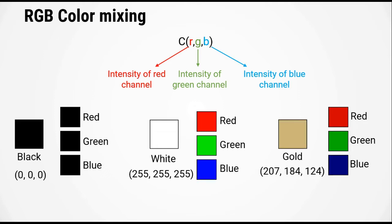We can look at a third color, which is CU gold. It's specified by the coordinates 207, 184, and 124, and these are indicated by the three squares shown here. So these are the relative intensities of the red, green, and blue channels.